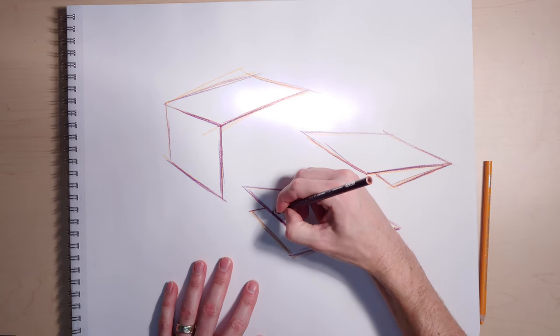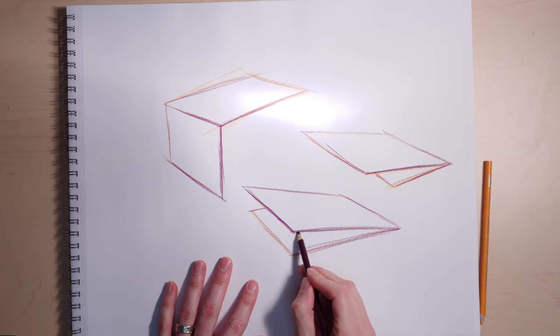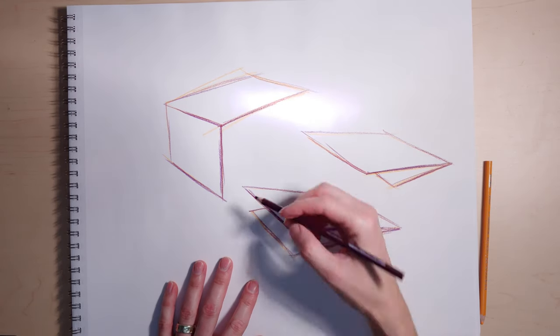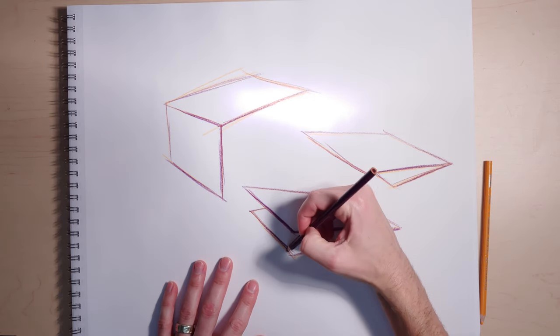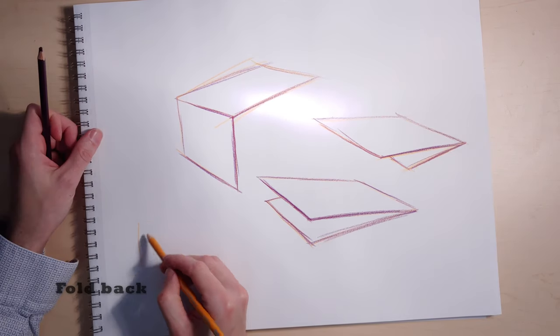Again, what I'm doing here is bumping up line weight and heaviness and kind of keeping it varied around the whole object so that different parts of it get emphasized differently.